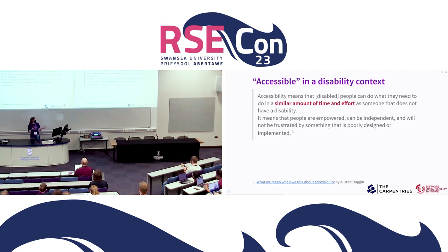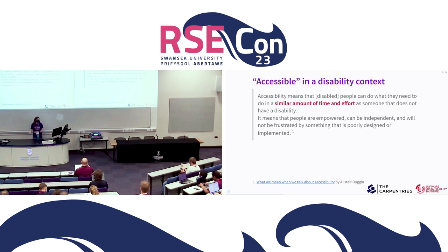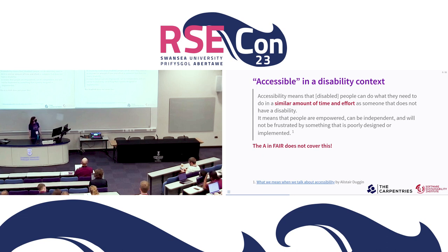What I'm trying to talk about is accessible in a disability context. Accessibility means that disabled people can do what they need to do in a similar amount of time and effort as someone that does not have a disability. It means that people are empowered, can be independent, and will not be frustrated by something that is poorly designed or implemented. The A in FAIR doesn't really cover this, and reading through the F, I, and R, you could maybe argue it's slightly covered in some of those, but it's not explicit anywhere. I think this is a bit of an oversight.